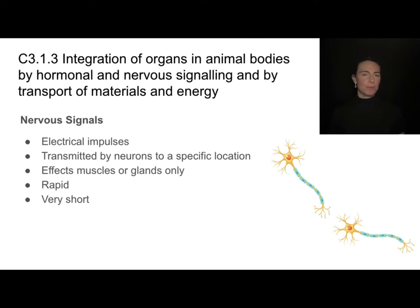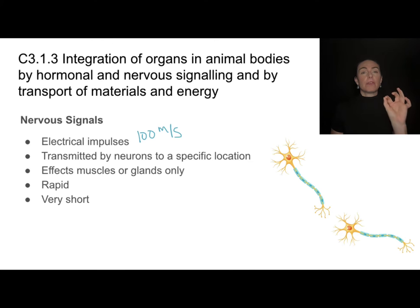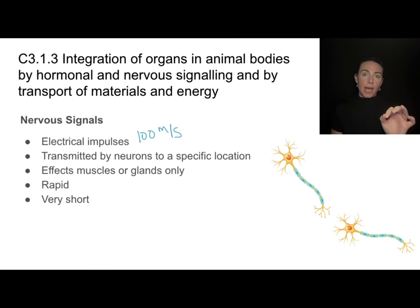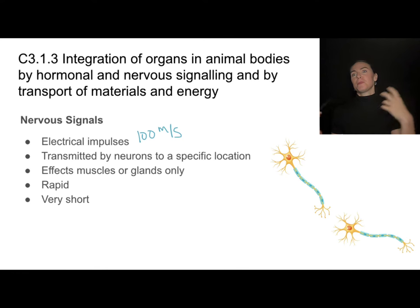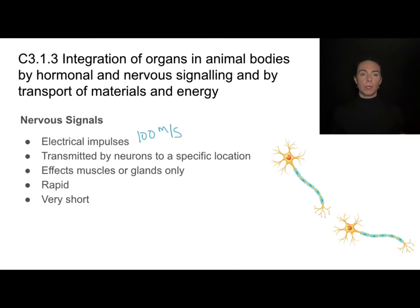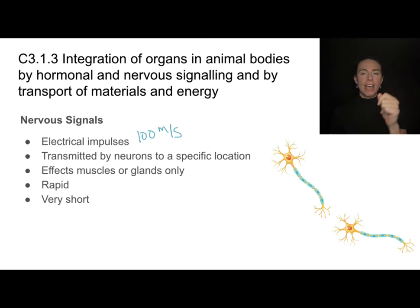Our nervous system isn't relying on blood — it's relying on electrical impulses, which can move upwards of 100 meters per second. These impulses can be transmitted by neurons to very specific locations. Unlike hormones that are distributed everywhere in the blood, nerve signals go to a specific spot, affecting a specific muscle or specific gland. Nerve signals are very rapid transmission methods, and they also last for only a very short time, compared to the long, slow-acting action of hormones.